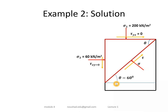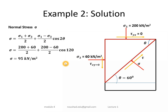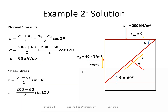With theta = 60 degrees, the normal stress is: sigma equals (sigma_1 + sigma_3)/2 plus (sigma_1 − sigma_3)/2 · cos 2θ. Substituting the values gives the normal stress. Similarly, the shear stress is: tau equals (sigma_1 − sigma_3)/2 · sin 2θ, and substituting gives the shear stress value.